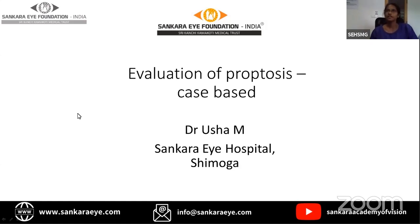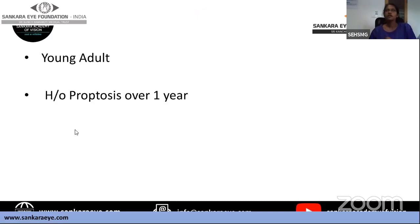In today's session I'll be talking about how to evaluate a case of proptosis based on a case scenario. The case given to me is a young adult with a history of proptosis over one year. What are the differential diagnoses I can consider in a young adult with a history of proptosis over one year?